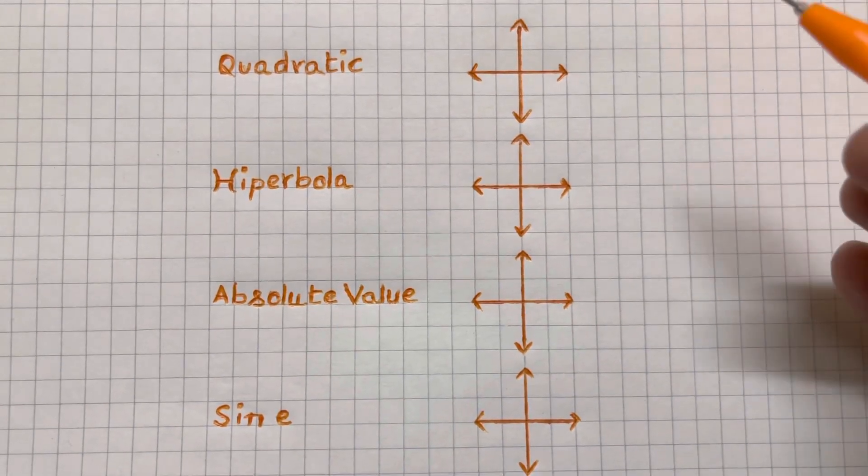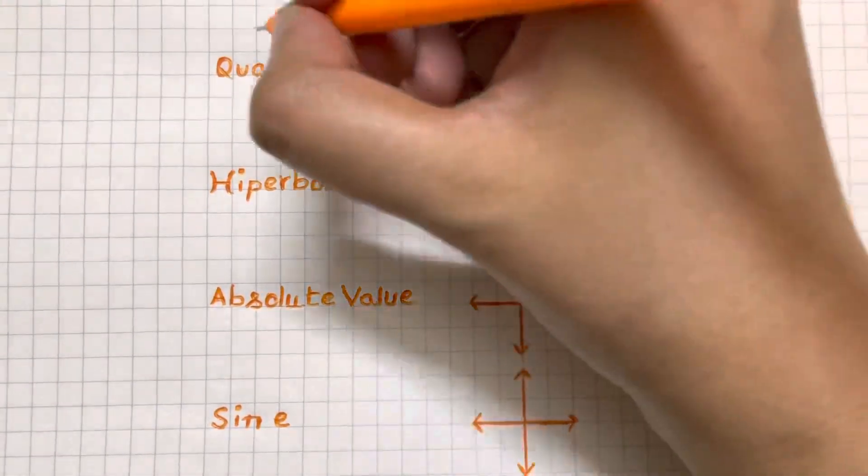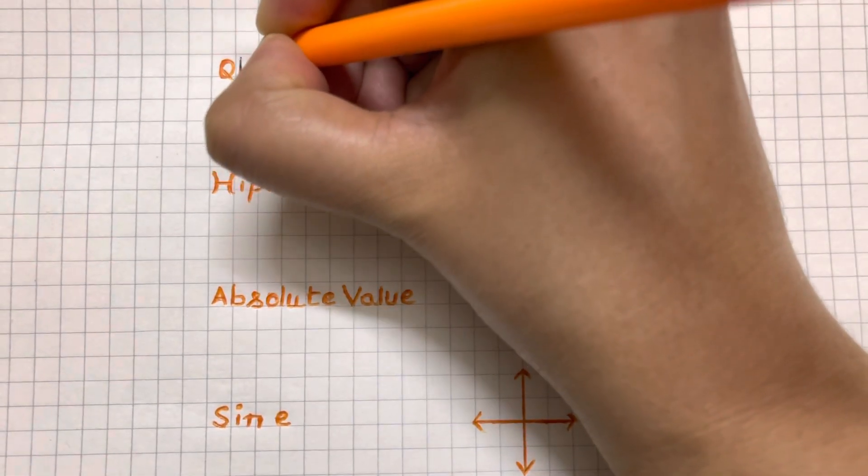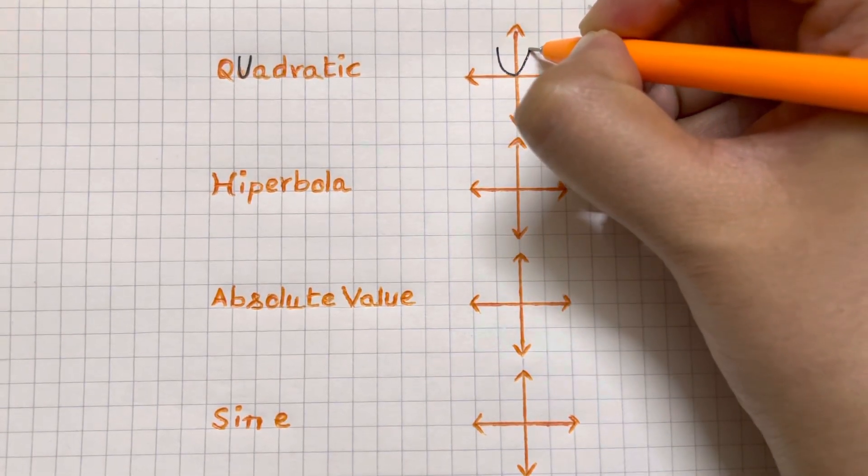In this I'm going to show you how you will remember a graph for quadratic equation. Quadratic - you just have a U. With the symbol U you can interpret the graph of quadratic function.